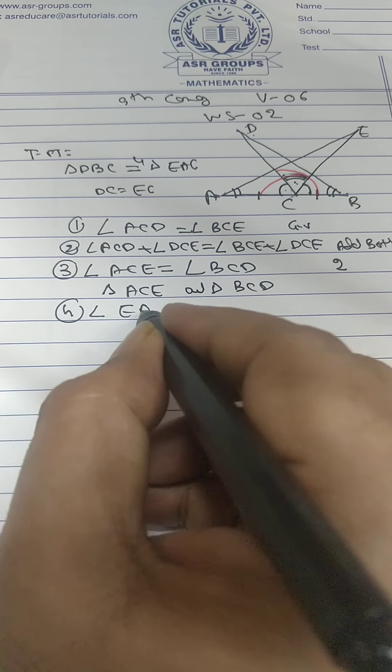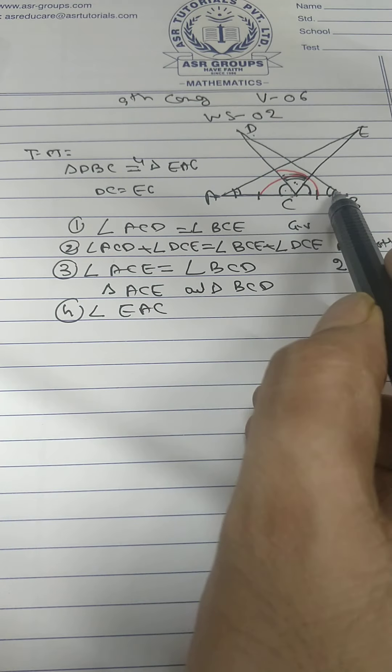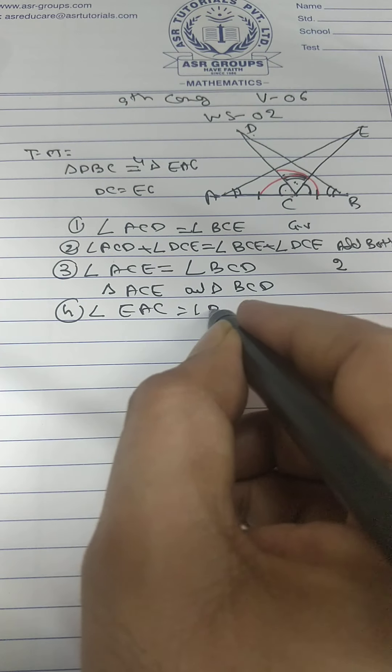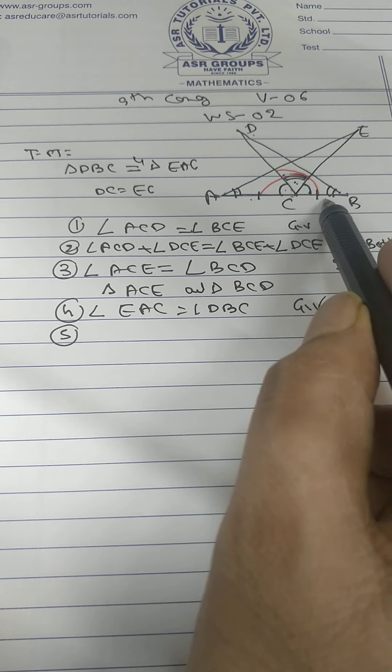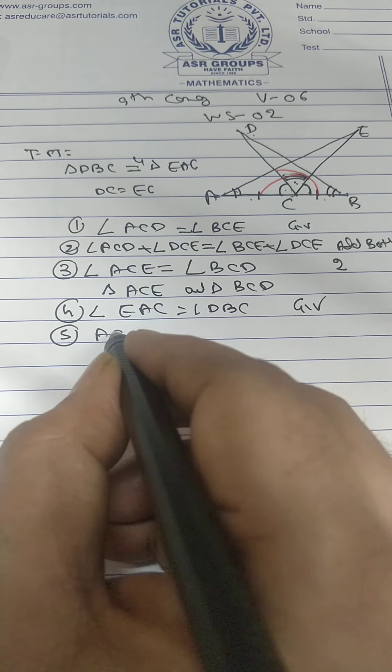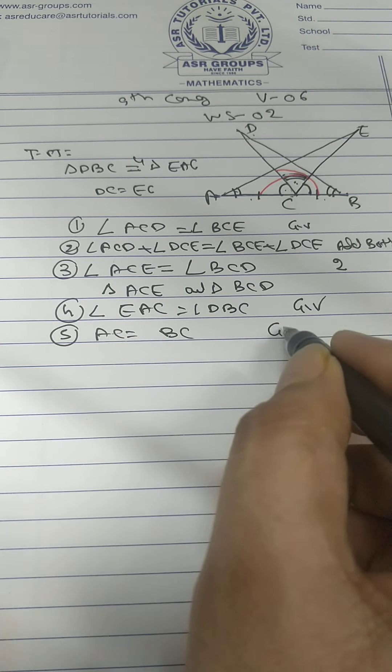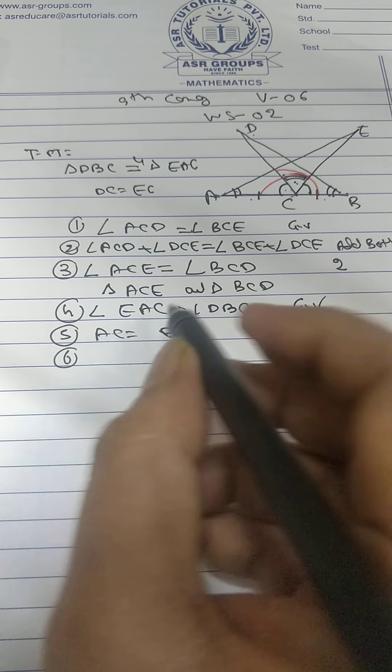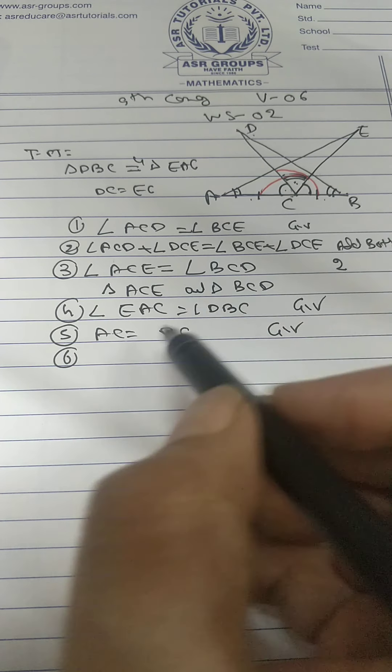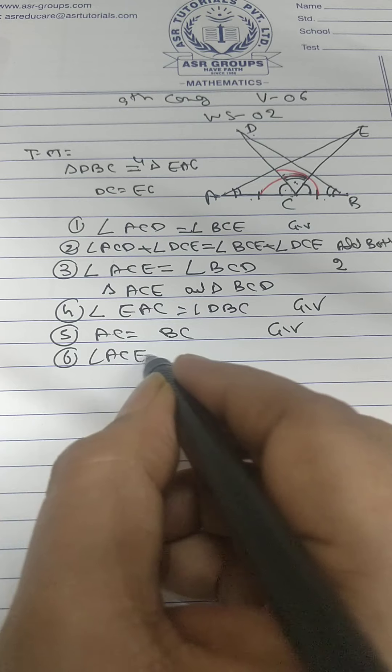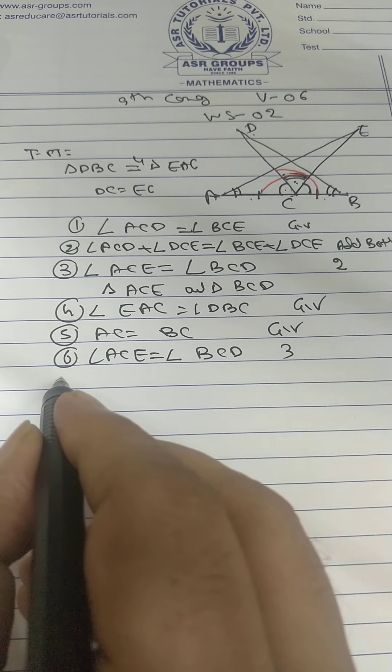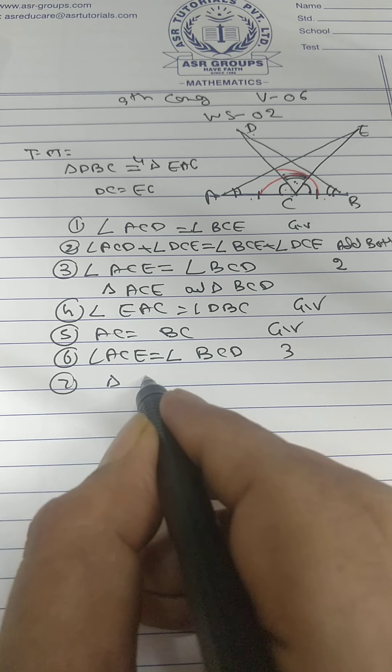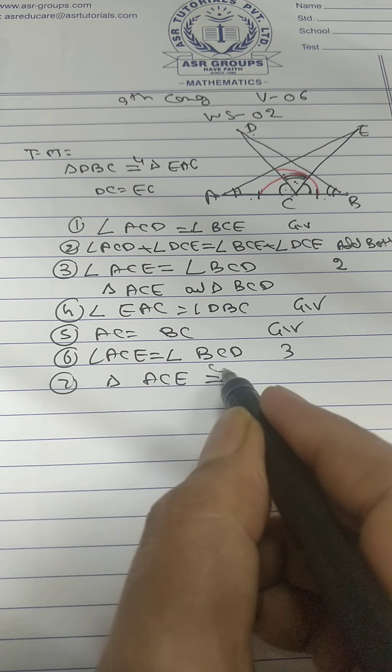Angle EAC equal DBC. Given AC equal BC. Given angle ACE equal BCD we proved in statement 3. Angle C.